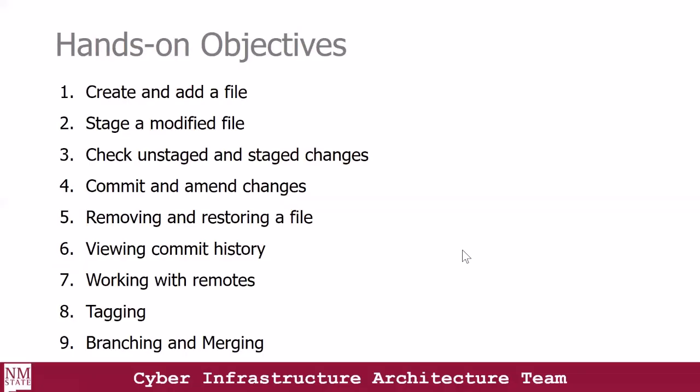In this section, we're going to do a hands-on. We'll create a file and add a file. We're going to stage a modified file. We'll check the unstaged and staged changes. Commit and amend changes. Remove and restore a file. View committed history. Work with remote, tagging, branching, and merging.